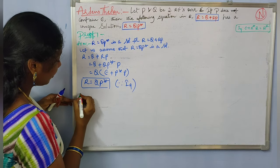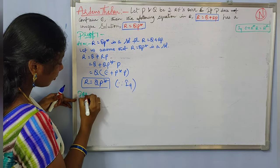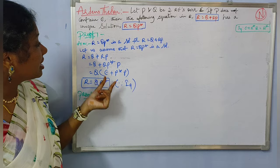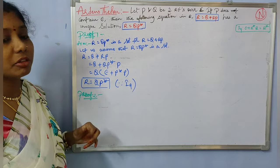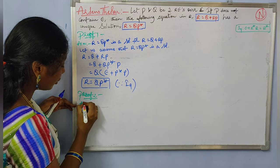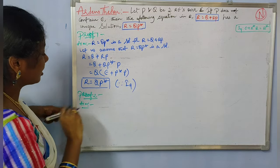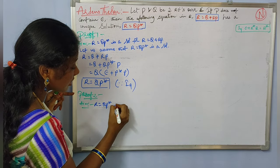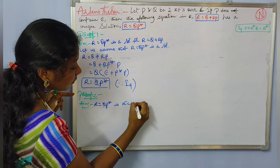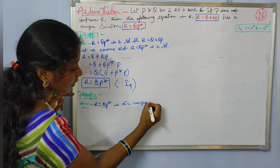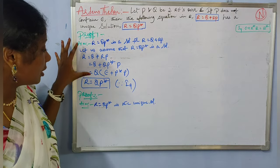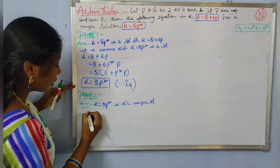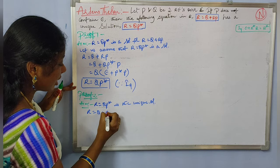What is proof 2? We now need to prove that this is the one and only solution — that is, the unique solution. The aim for proof 2 is to prove that R equal to QP star is the unique solution. Again consider R equal to Q plus RP.